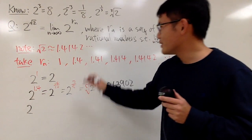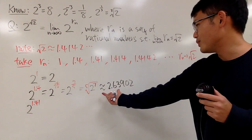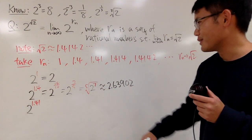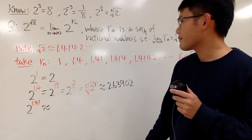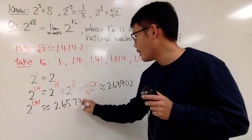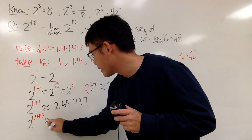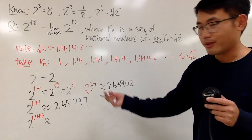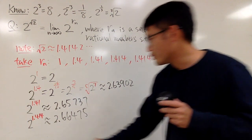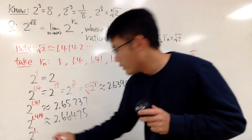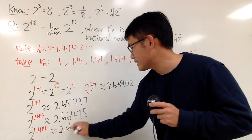Next, 2 raised to the 1.41 power — leave a comment if you want me to do Newton's method for this one. Then, 2 raised to the 1.414 power is approximately 2.65707. Next, 2 raised to the 1.414 power gives approximately 2.66475. And then, 2 raised to the 1.4142 power gives us approximately 2.66512.